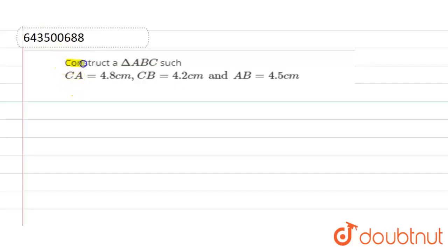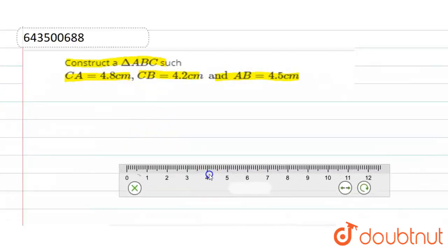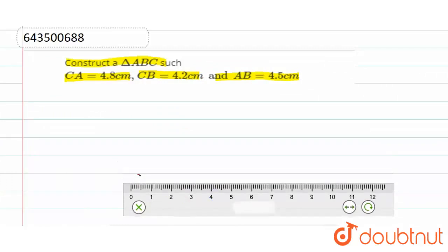The question says construct triangle ABC such that CA equals 4.8 centimeters, CB equals 4.2 centimeters, and AB equals 4.5 centimeters. So we will construct the triangle with the help of a ruler. This is our ruler and let's draw.